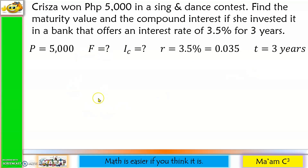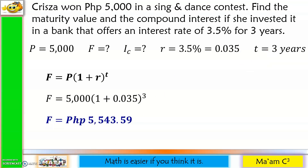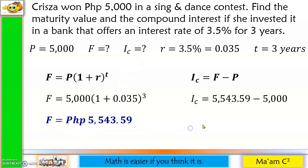Let's have our formula for future value: F is equal to P times the quantity 1 plus R raised to T. Let us substitute our values here. Our principal amount is 5,000, the rate is 0.035, and the time is 3. This will give us 5,543 pesos and 59 centavos. Next, let us compute for the compound interest. I sub C is equal to the future amount minus the principal amount. So 5,543.59 minus 5,000 gives us 543 pesos and 59 centavos.